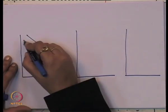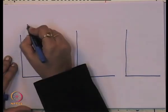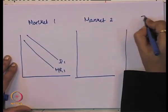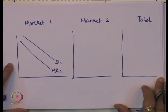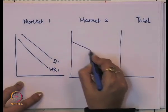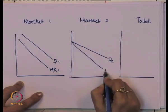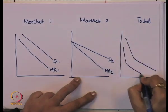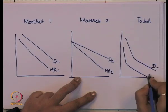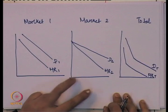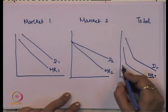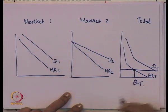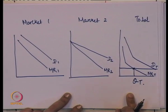In the graph, market one has demand curve D1 and marginal revenue MR1 — this is the inelastic market, as can be seen from the shape of the demand curve. Market two has its own demand and MR curves. Taking both markets together, we get a total demand curve DT and marginal revenue MRT. On the basis of the marginal cost, we get the total sale or output of the market.